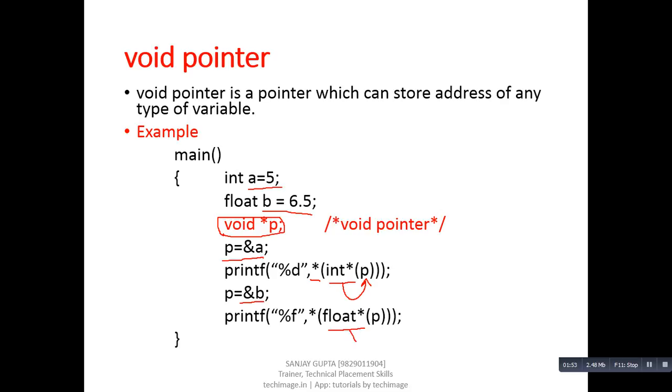This time b is of float type, so for type casting purposes we have used float pointer. Here p will be converted into float type, then we can dereference it with the help of the asterisk operator so that it can print the value of b easily.